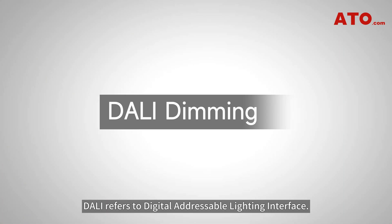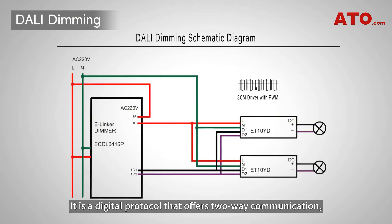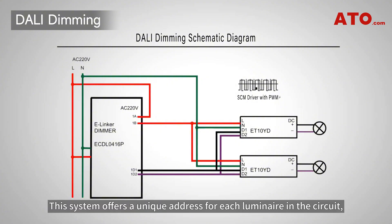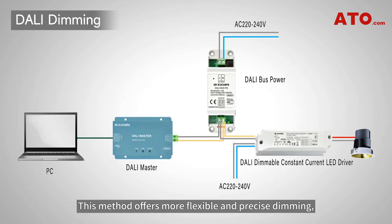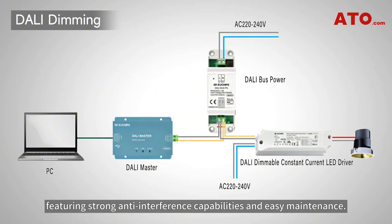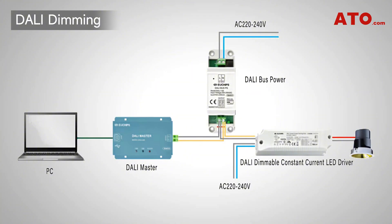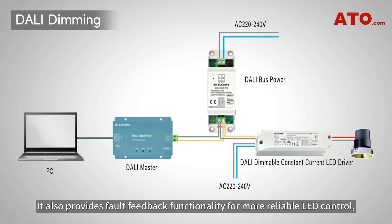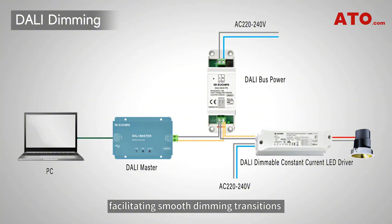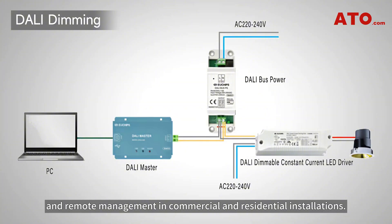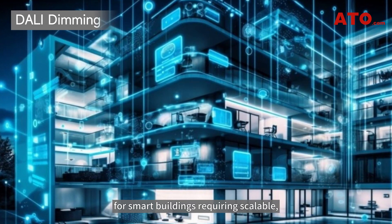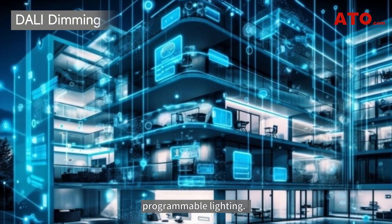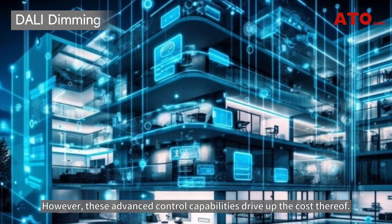DALI refers to Digital Addressable Lighting Interface. It is a digital protocol that offers two-way communication, allowing individual or group control of fixtures. This system offers a unique address for each luminaire in the circuit, enabling individual fixture control. This method offers more flexible and precise dimming, featuring strong anti-interference capabilities and easy maintenance. It also provides fault feedback functionality for more reliable LED control, facilitating smooth dimming transitions and remote management in commercial and residential installations. Furthermore, its scene configuration capability makes it perfect for smart buildings requiring scalable, programmable lighting. However, these advanced control capabilities drive up the cost thereof.